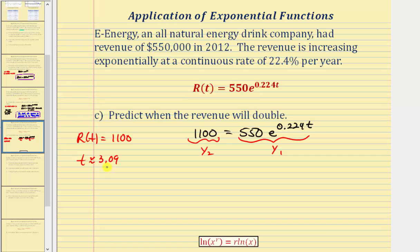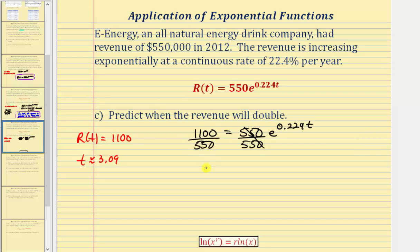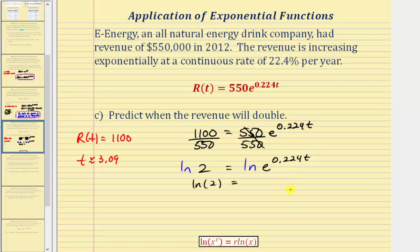Let's also solve this algebraically using logarithms. First, isolate the exponential part by dividing both sides by 550, giving 2 equals e raised to the power of 0.224t. Now take the natural log of both sides: natural log 2 equals natural log of e raised to the power of 0.224t. Applying the power property of logarithms, this becomes 0.224t times natural log e. Since natural log e equals 1, we have natural log 2 equals 0.224t.